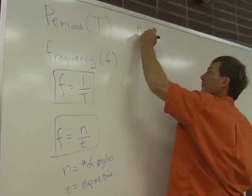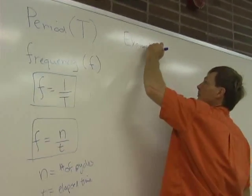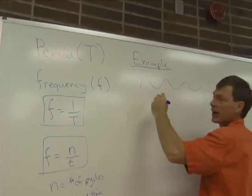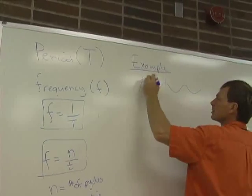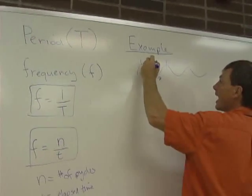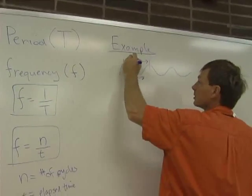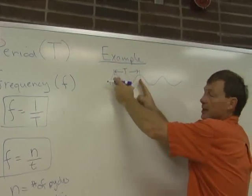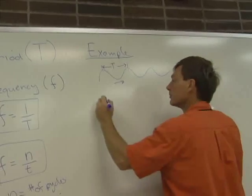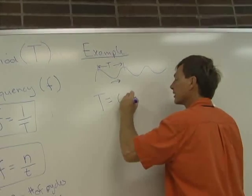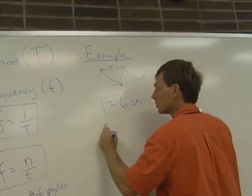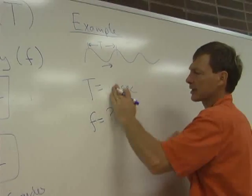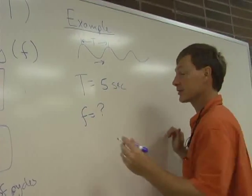For example, I've got some repetitive line. Could be an ocean wave moving this way, and the time between peaks, the waves coming at me. The time it takes for one peak to hit and then another peak to hit, the time for one cycle, is six seconds. And I want to know, what's the frequency? Let's make it five seconds. What's the frequency?